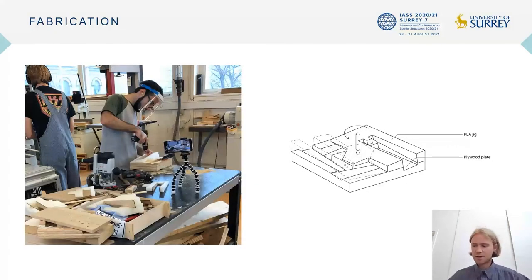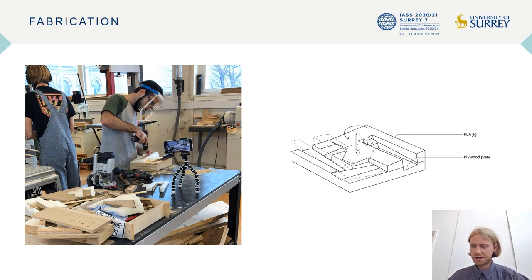The plywood connection plates required grooves with oblique angles, and this is not possible with our 3-axis CNC machine. Therefore we had to make use of a 3D printed jig and hand router to fabricate the plates.